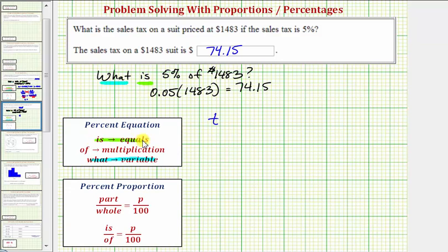Next we have is. Is means equals. So now we have t equals. Next we have the percent, which again must be expressed as a decimal, so we have 0.05. Then we have the word of. Of means multiplication. So we have times. Then we have the number 1,483. Notice this product is the same product we had above here. So we know the product is 74.15, giving us our sales tax.